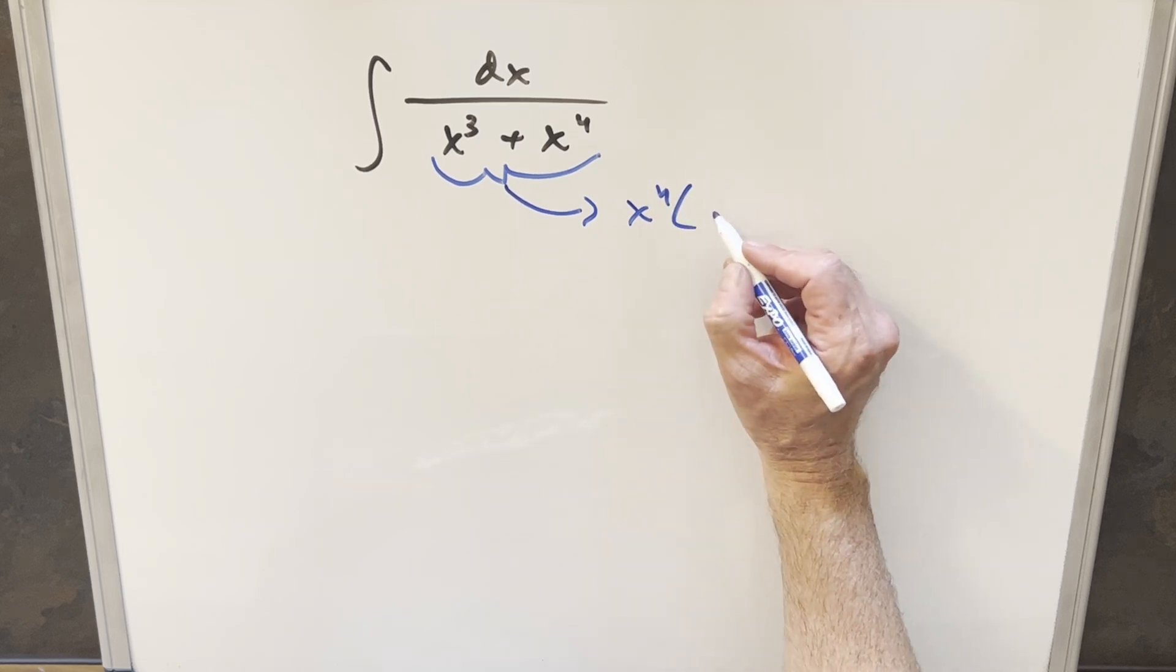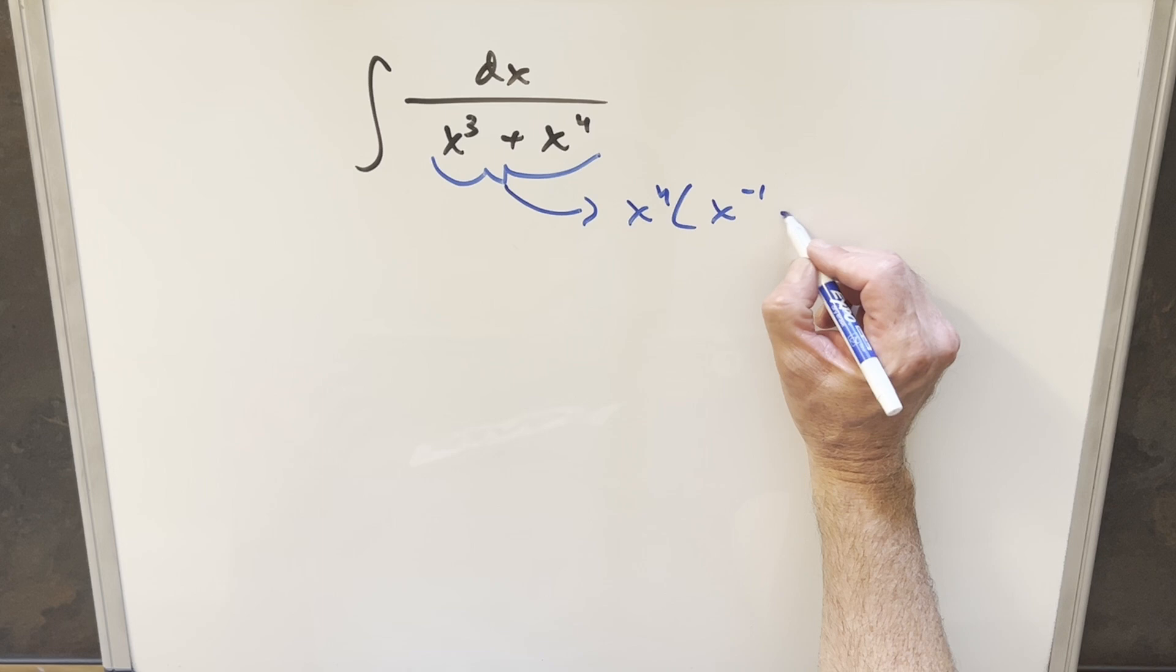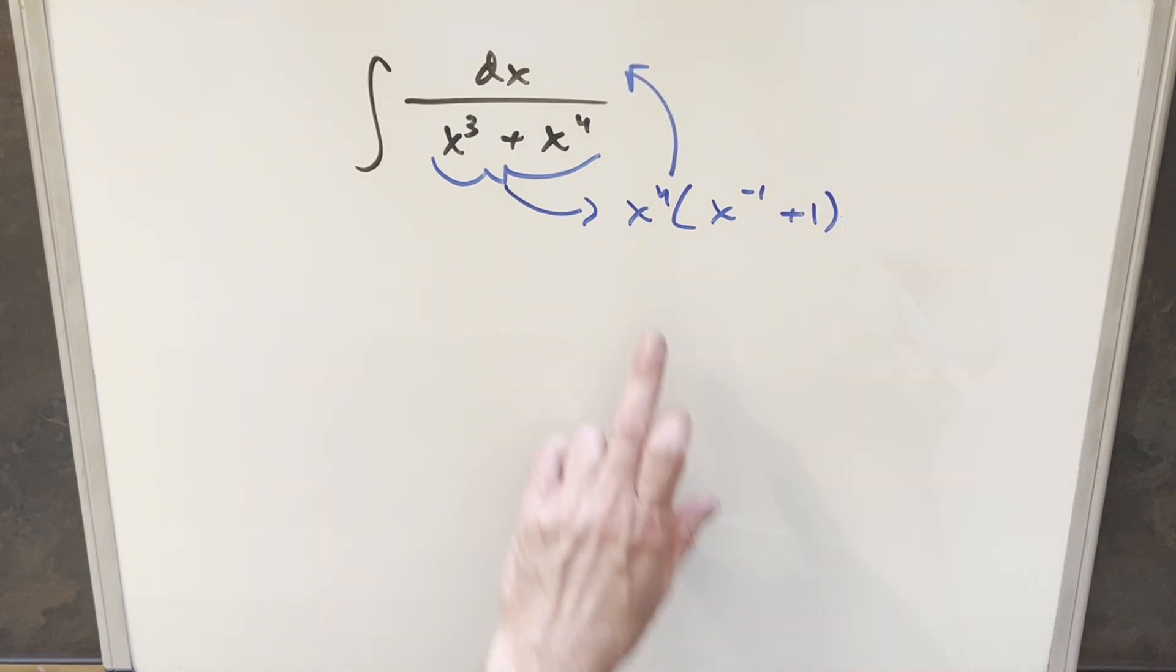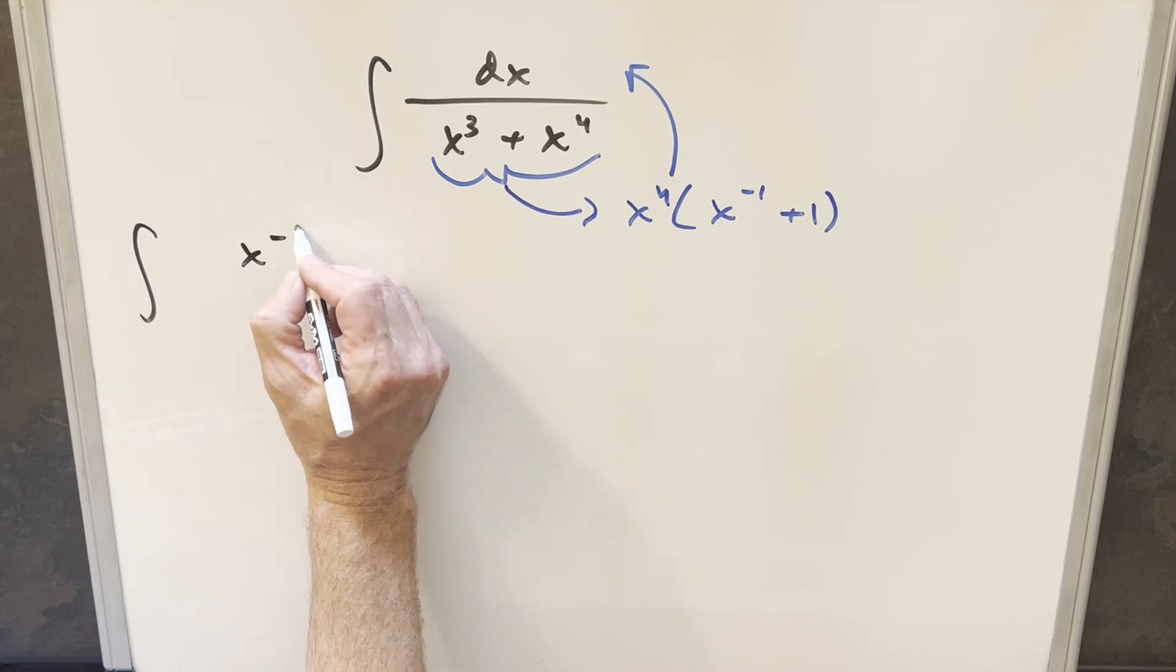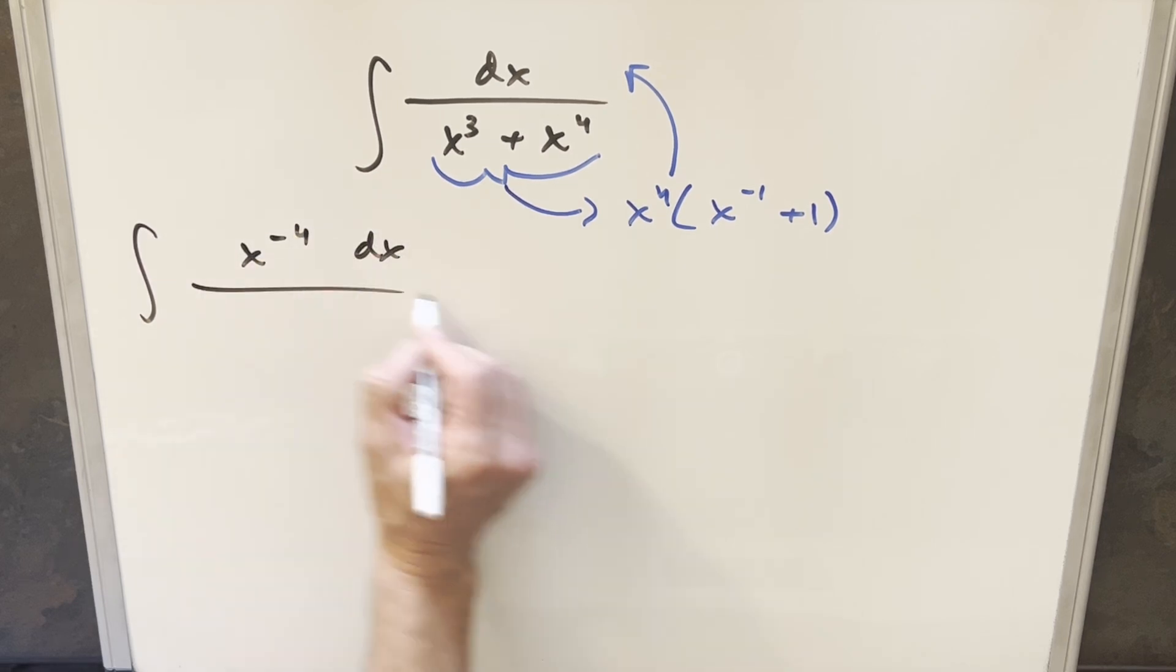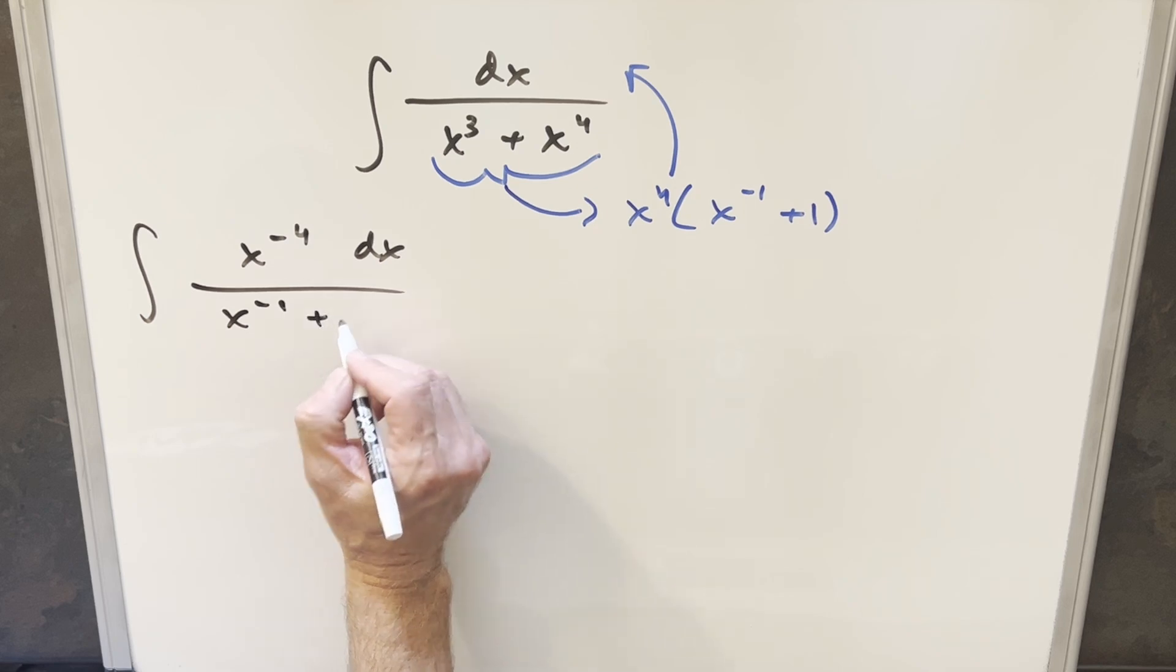So when we do that, we're going to have x to the 4th times, I can write it as 1 over x or x to the minus 1 plus 1. We'll take the x to the 4th into the numerator. So with the rewrite, we're going to have x to the minus 4 dx over this stuff, x to the minus 1 plus 1.